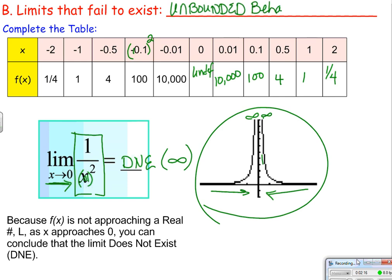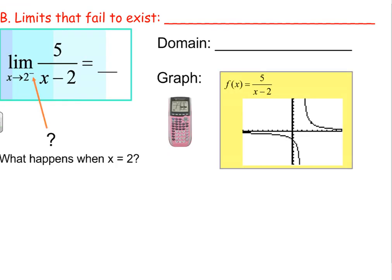This would be an example of unbounded behavior. It's unbounded behavior at our x value of 2. Next one.